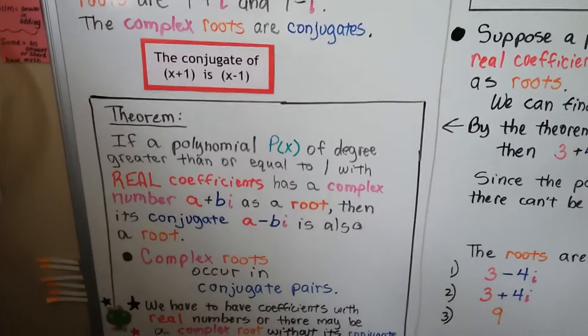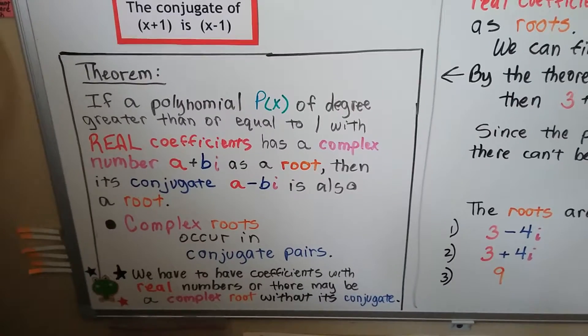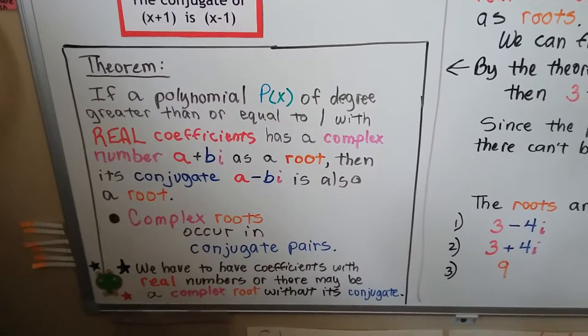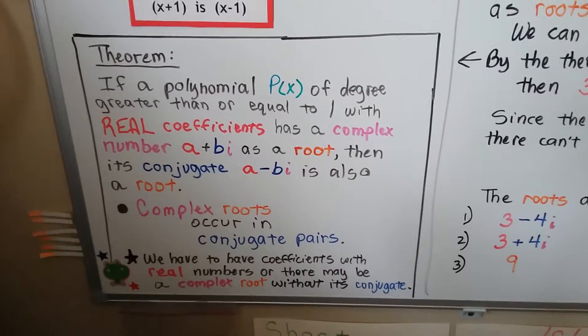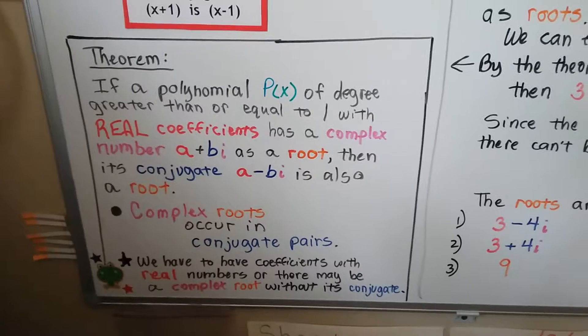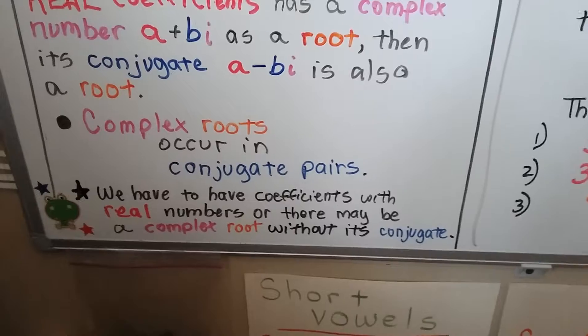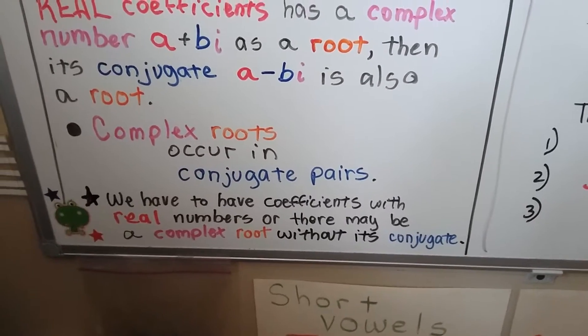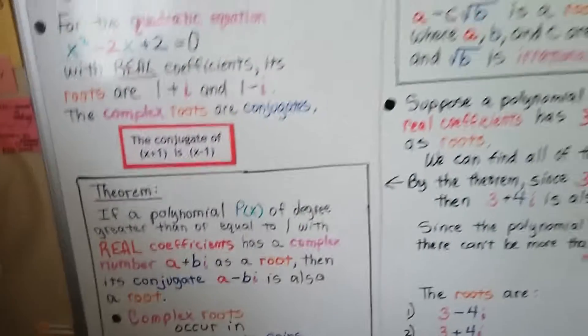Here's our first theorem. If a polynomial p of x of degree greater than or equal to 1 with real coefficients has a complex number a plus bi as a root, then its conjugate a minus bi is also a root. And complex roots occur in conjugate pairs. We have to have coefficients with real numbers, or there may be a complex root without its conjugate.